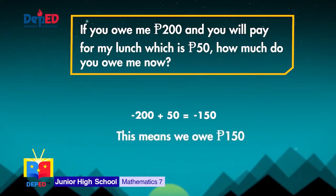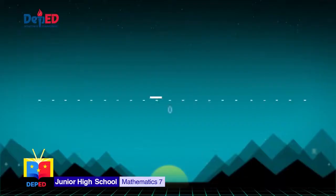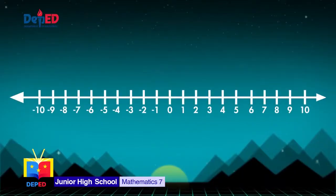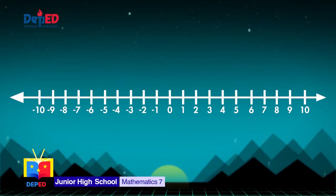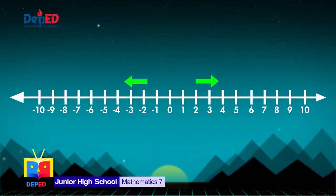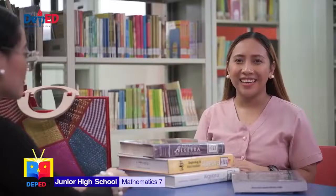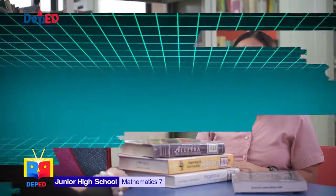When talking about money, a negative sign symbolizes a debt. So Auntie Jer, I only owe you 150 pesos. We also learned that a number is an integer if it is included in the set of numbers consisting of zero, the positive natural numbers, and their additive inverses, which are the negative numbers. In today's episode, Auntie Jer will help us tackle the first two fundamental operations: addition and subtraction of integers.